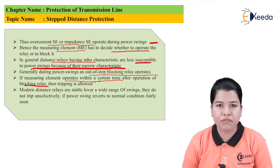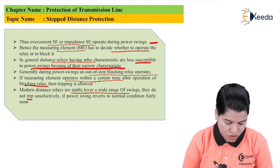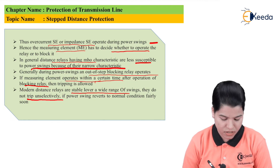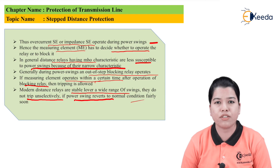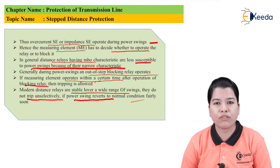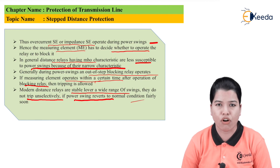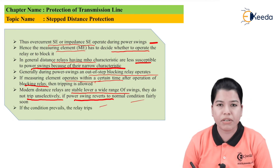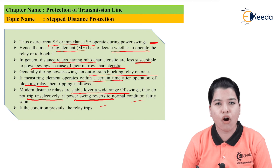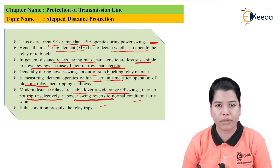Modern distance relays are stable over a wide range of swings and do not trip unselectively if the power swings revert to normal conditions fairly soon. Power swings are only present for a small period of time, after which they return to normal. The relay must decide whether to trip or not. For heavy power swings, the relay should operate, but a power swing of very short duration should not be considered a fault. Only if the condition persists — that is, if power swings keep recurring or have very high magnitude — will the relay operate.